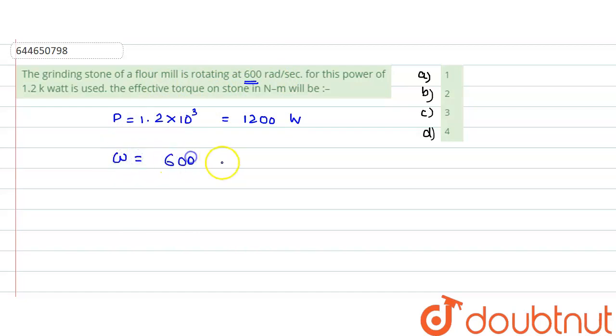Now how is power related with torque and angular velocity? So we know that power is equals to torque multiplied by angular velocity omega. So we can say that our torque would be equals to power by angular velocity.